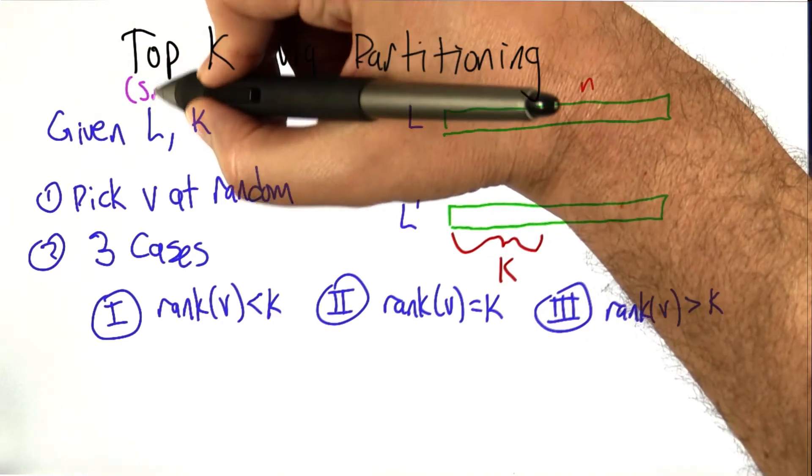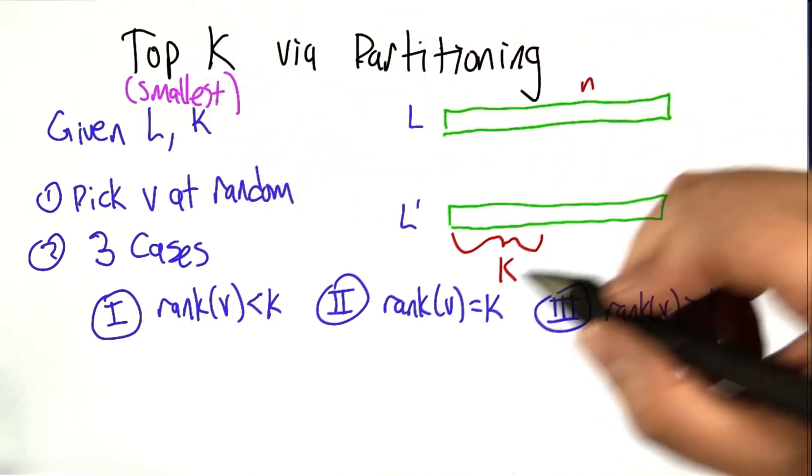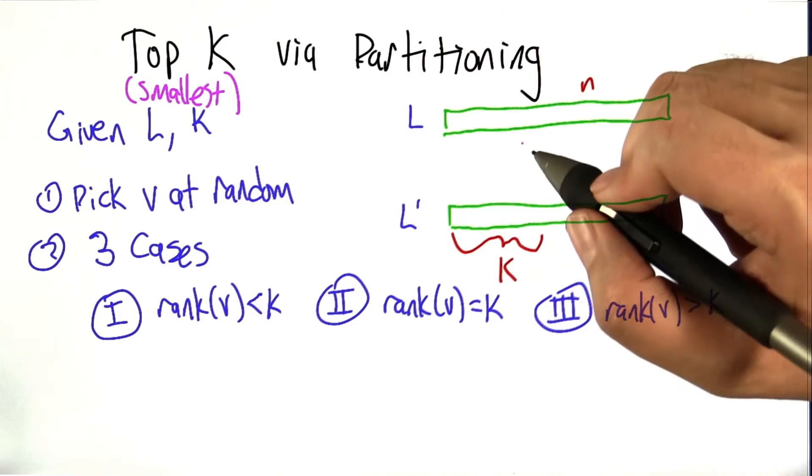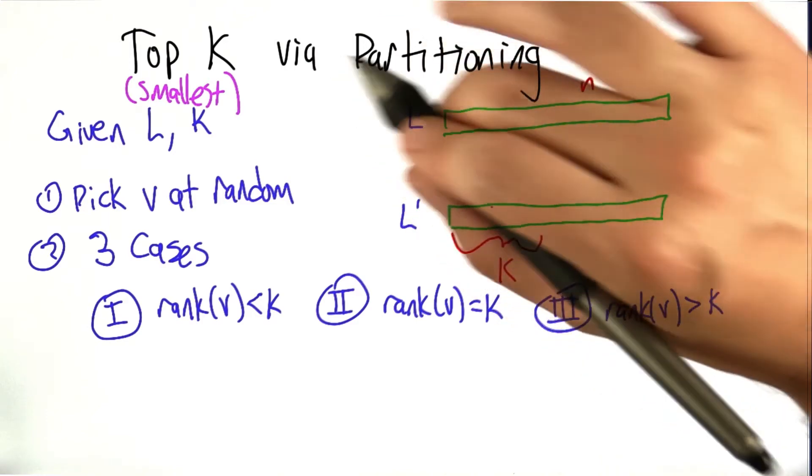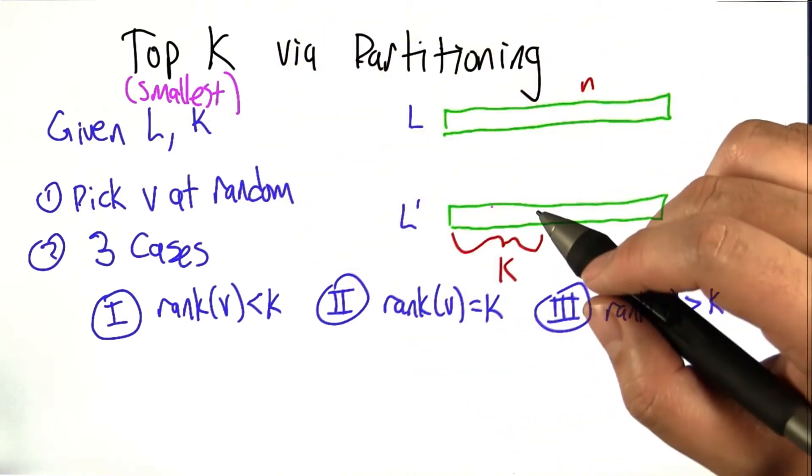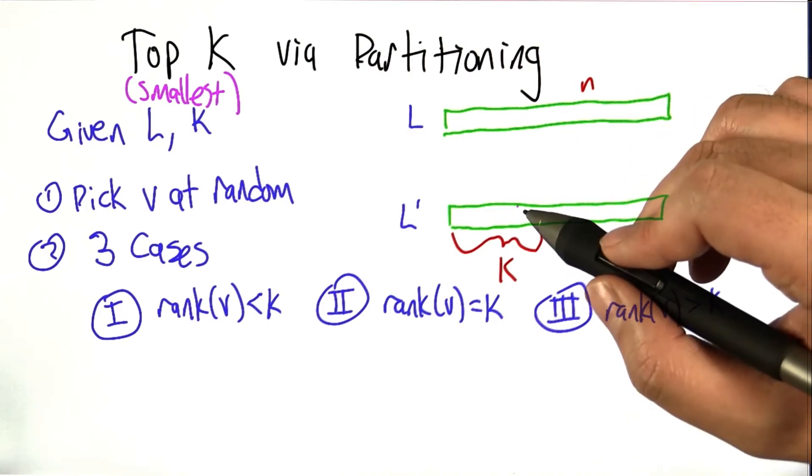And for the sake of simplicity in this example, by top, I mean smallest, the ones that have the smallest values. You can always flip things around, turn the greater thans into less thans and so forth, and everything will be fixed. But for now, let's just imagine that we're interested in the smallest k elements if the list were sorted.